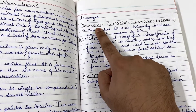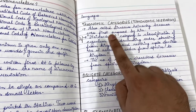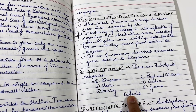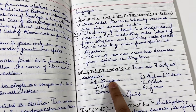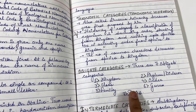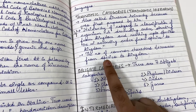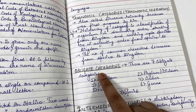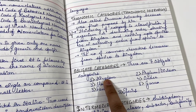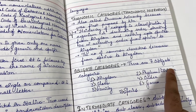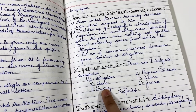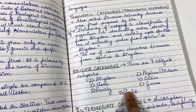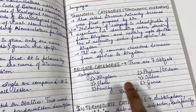Now let us look at taxonomic hierarchy, which means the classification of organisms from kingdom to species or from species to kingdom. There are seven obligate categories in taxonomic hierarchy: kingdom, phylum (or division), class, order, family, genus, and species — in that serial order. Note that 'phylum' is the term used in animals and 'division' is used in plants.